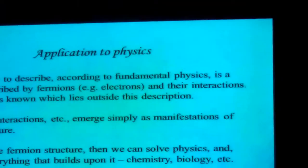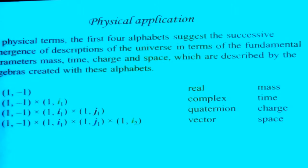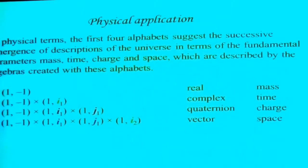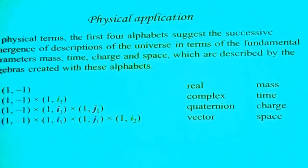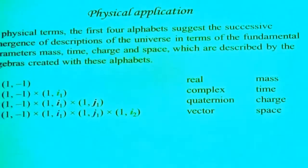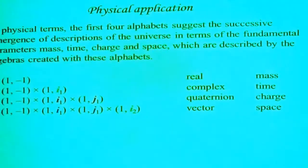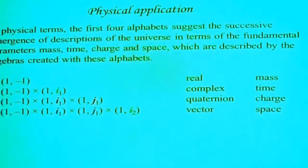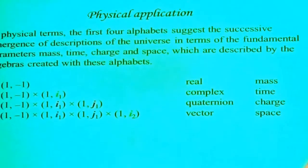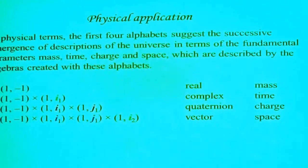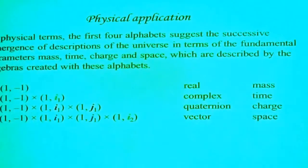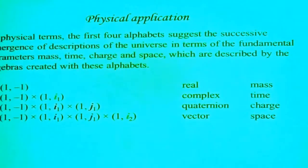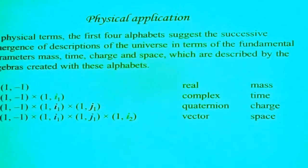And implicitly, everything that builds upon it. Maybe we can get more directly at things like chemistry and biology, and we'll talk about that later. If we look at the first four alphabets using the algebraic version that we have of them, we see that these are specific algebras in mathematics — a specific set of algebras. They are what we call the division algebras.